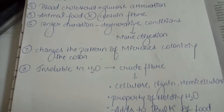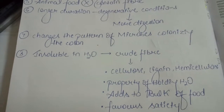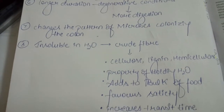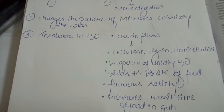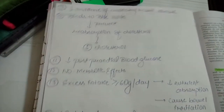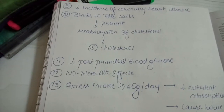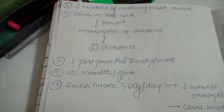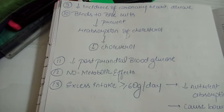Insoluble fiber — which is the crude fiber including cellulose, lignin, and hemicellulose — has the property of holding water and adds to the bulk of the food. It favors motility and increases the transit time of food in the gut.